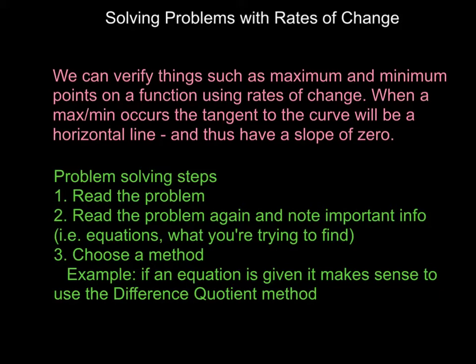I'm just going to take this a little bit further and look at the horizontal tangent. We know that a minimum or max occurs when the tangent is horizontal, so it has to have a slope of zero. We can use this fact to verify things.